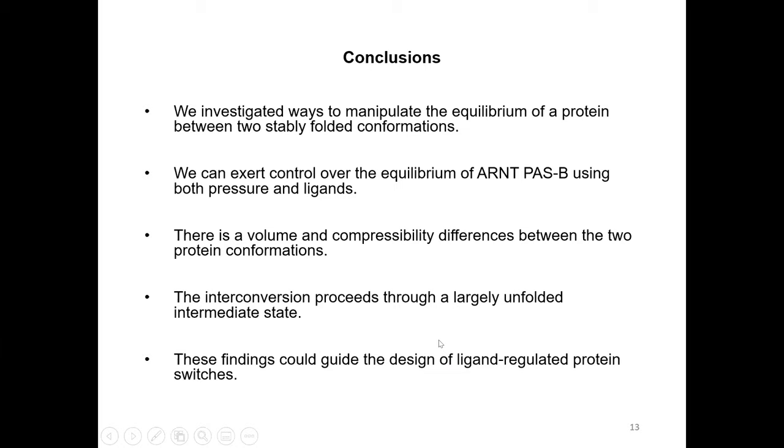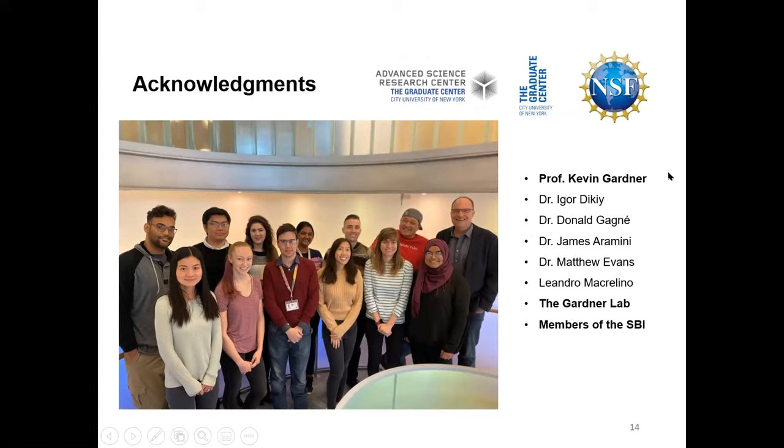In conclusion, we investigated different ways we could control the equilibrium of a protein between conformational states. In particular, we showed we can exert control over the equilibrium of this ARNT PAS-B protein using both pressure and ligands. Additionally, we found there are volume and compressibility differences between the two folded conformations and the transition state. The interconversion proceeds through a largely unfolded intermediate state. We think these findings can help us design novel ligand-regulated protein switches by characterizing how the interconversion process occurs and how ligands could affect the equilibrium. These findings are generalizable. Finally, I'd like to acknowledge the funding agencies and my mentor Kevin and all the co-authors and other members of our lab and research institution. Thank you all for your attention.